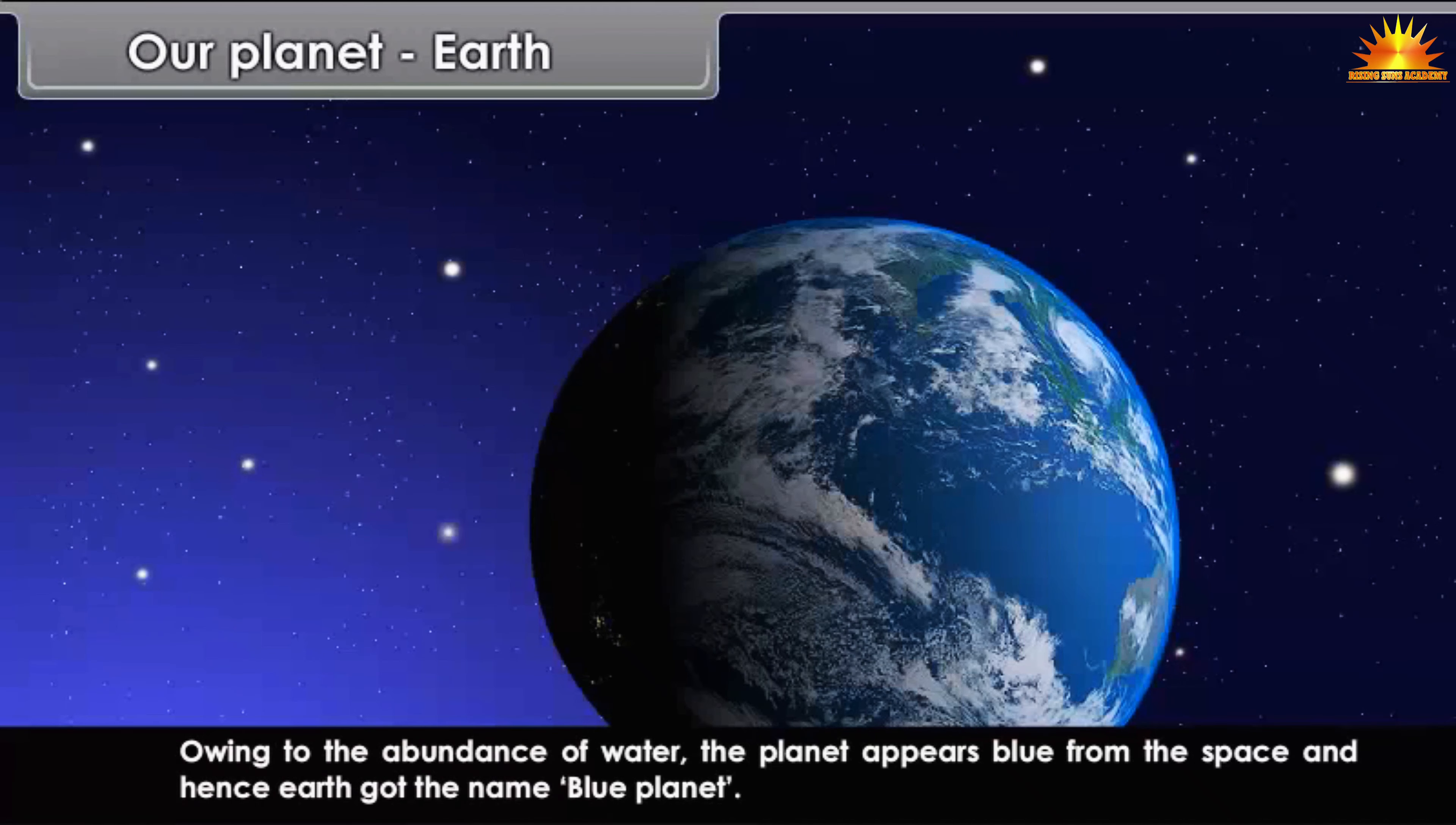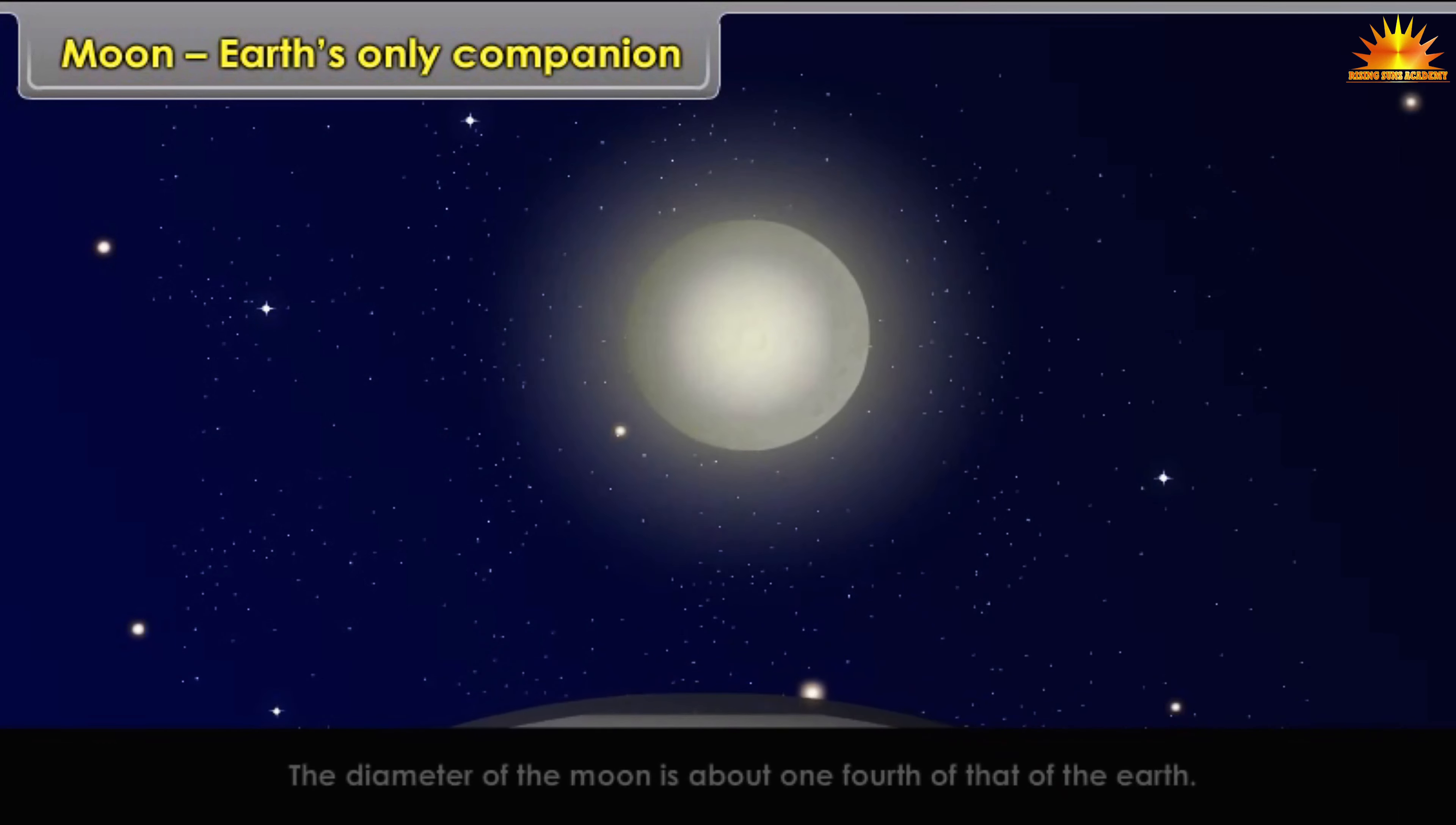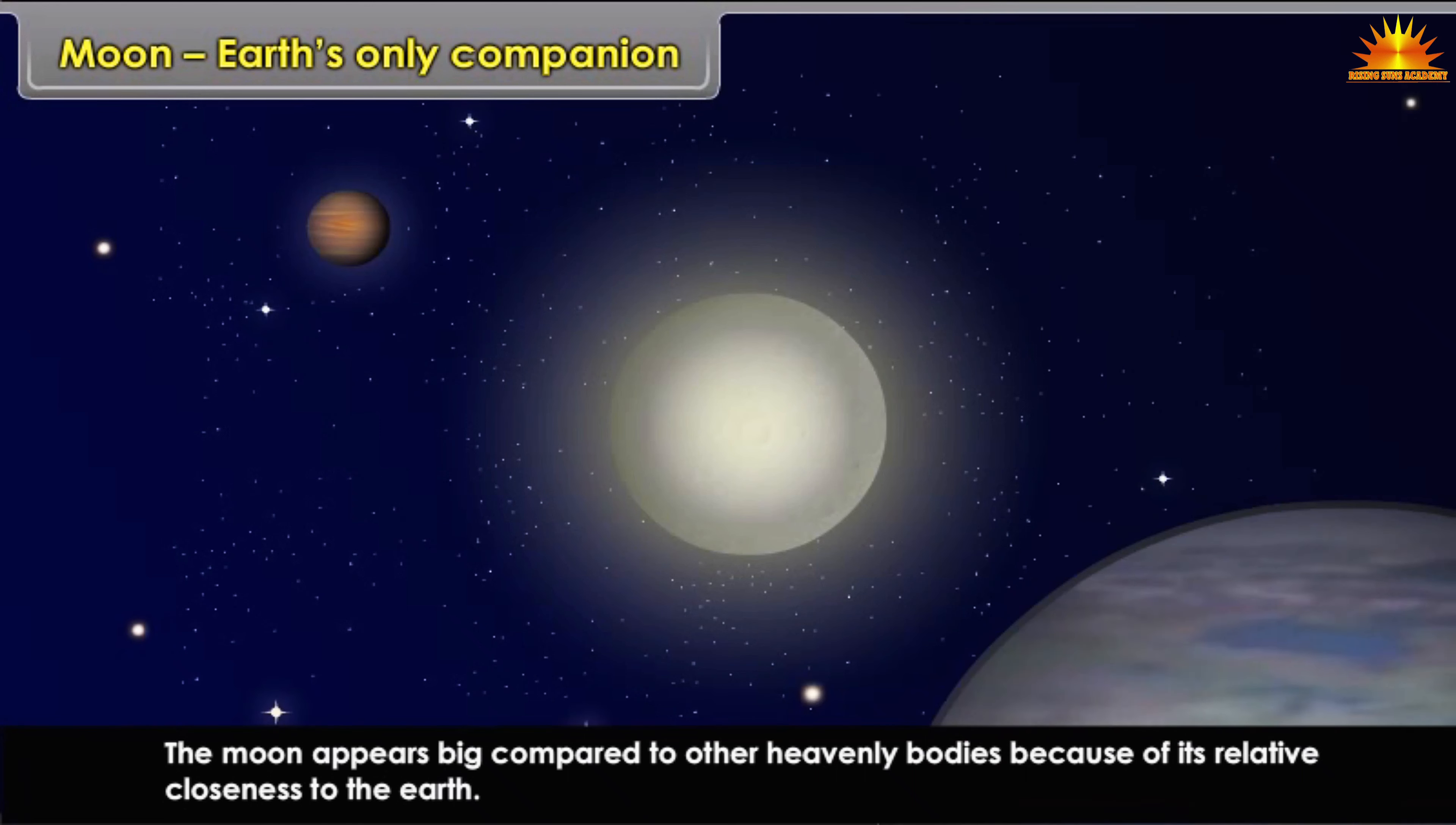Moon - Earth's only companion: Moon is the only satellite of the Earth. The diameter of the Moon is about one-fourth of that of the Earth. The Moon appears big compared to other heavenly bodies because of its relative closeness to the Earth.